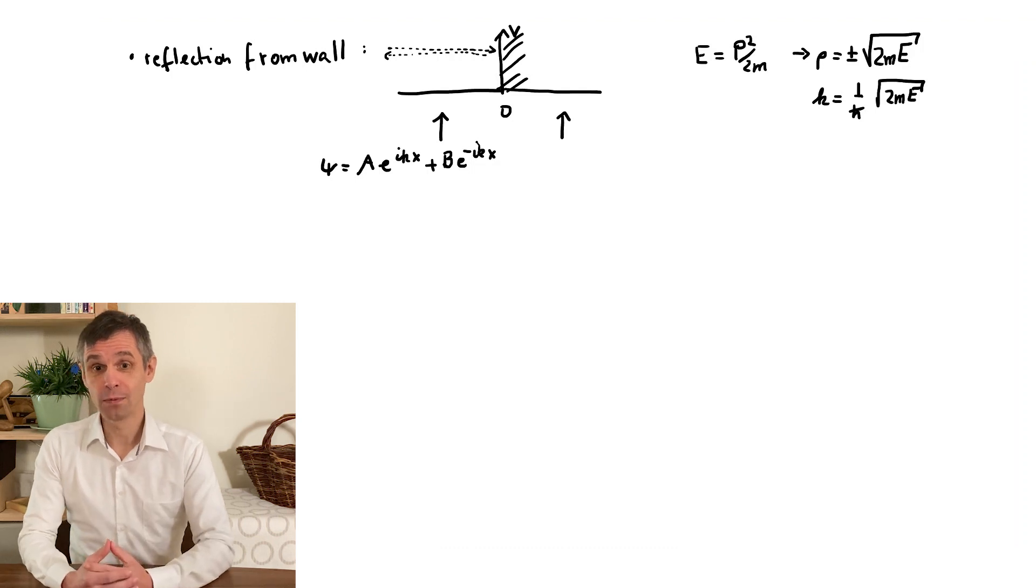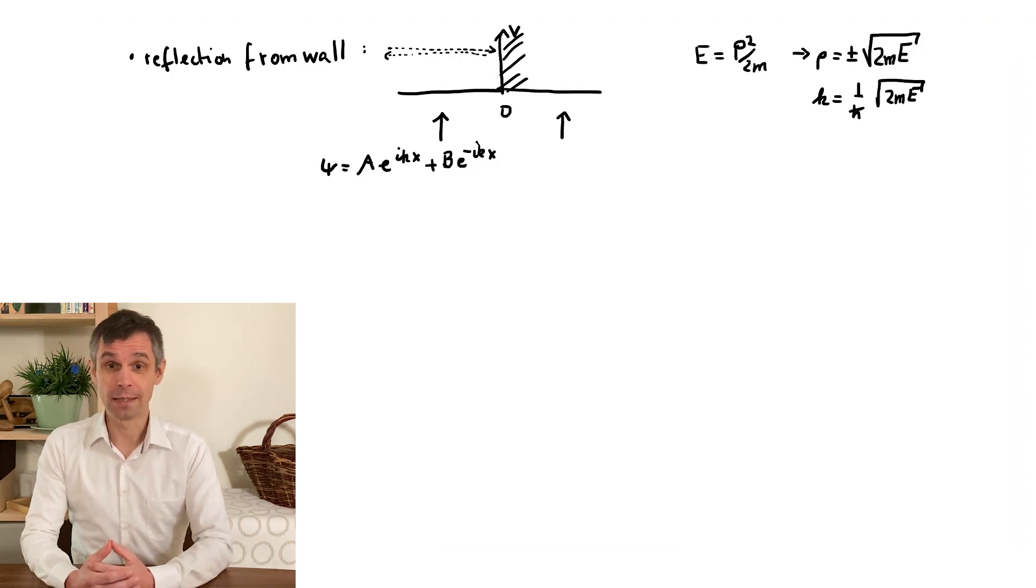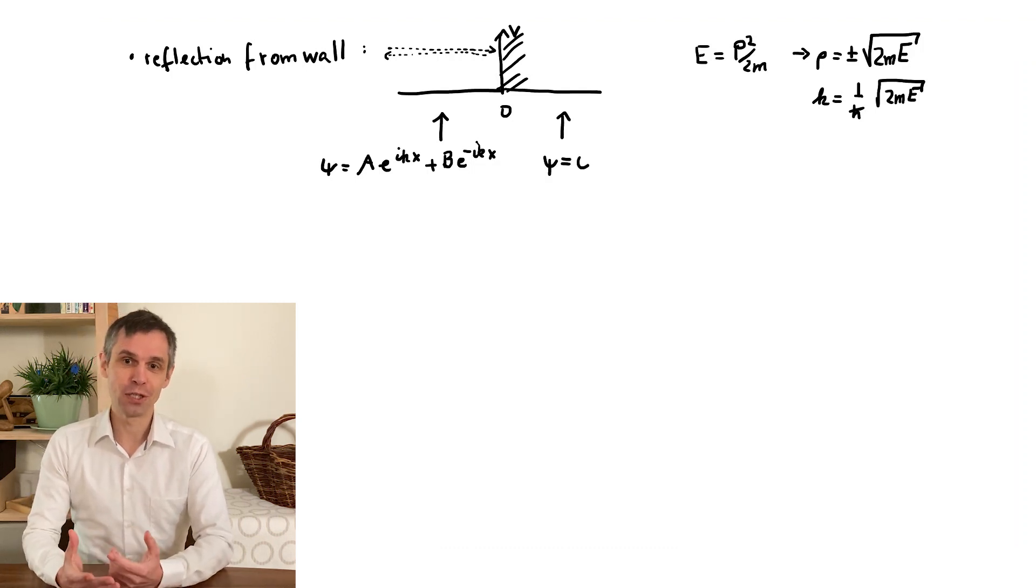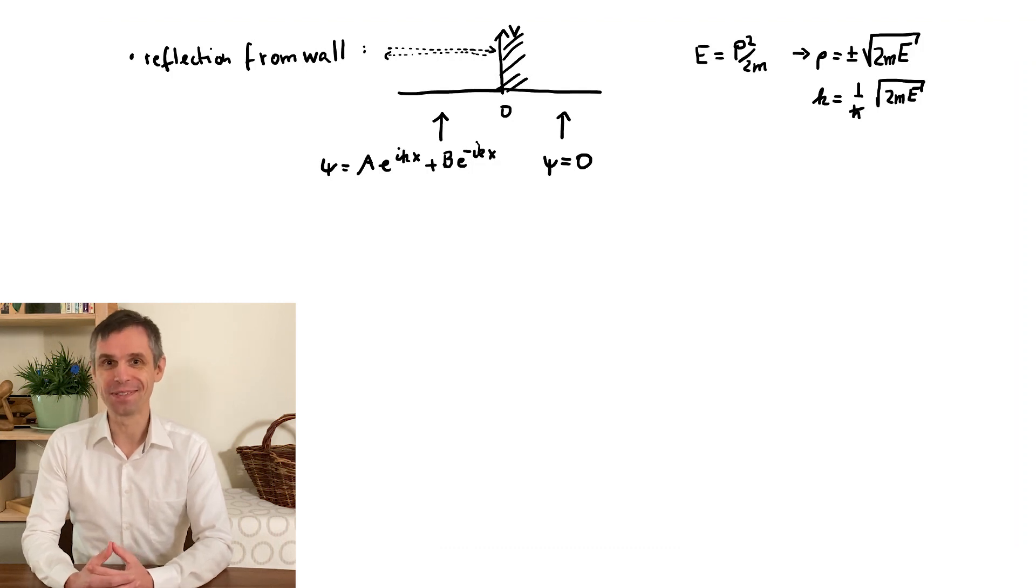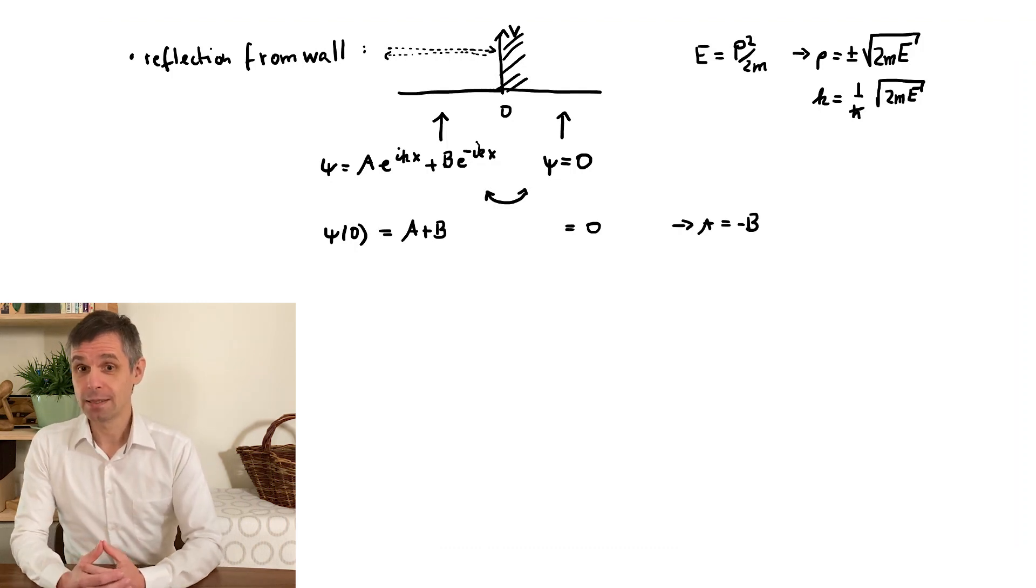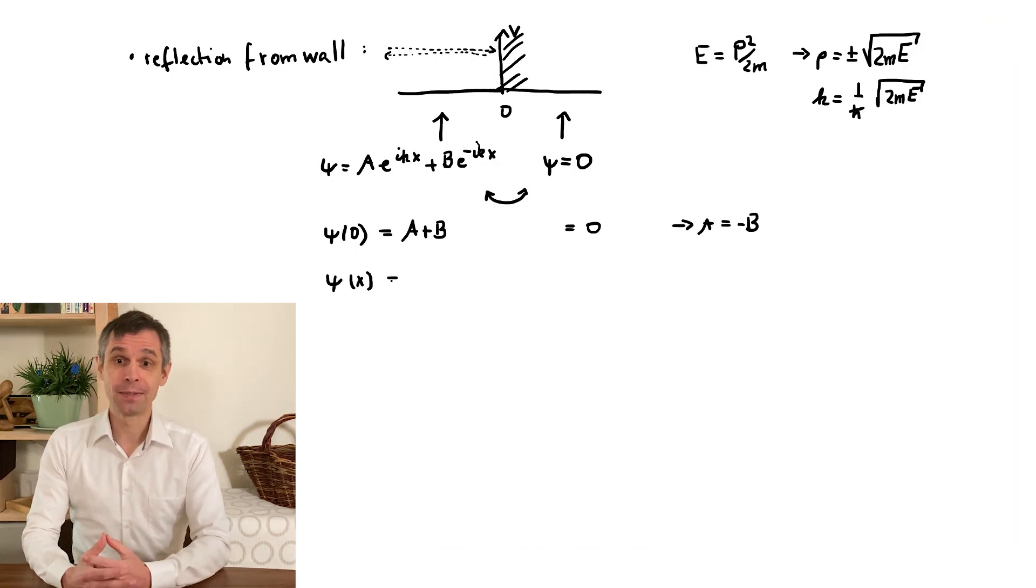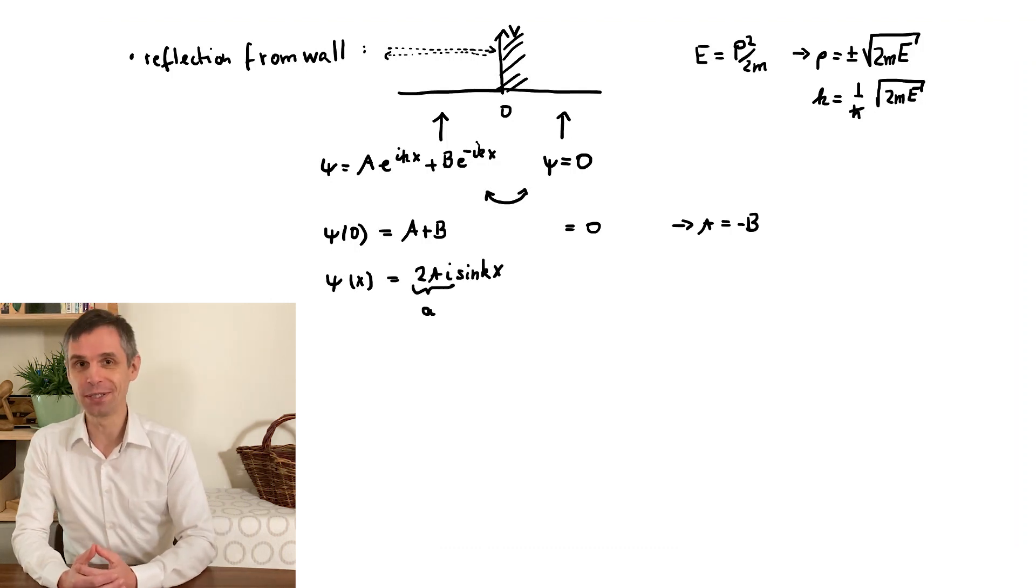And in the wall, where we again assume that the potential energy is infinite, the wave function must vanish because of our boundary conditions. And we have the continuity condition, where the regions meet, which again dictates that the two amplitudes must be equal in magnitude and of opposite signs, so that one obtains a node at the boundary between the two regions.